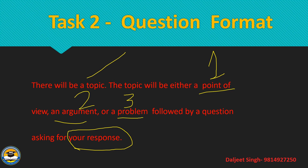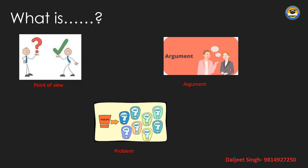Point of view, argument, and problem are the three things. A point of view is a specific attitude or manner in which a person thinks about something — a particular attitude or perspective toward a topic.